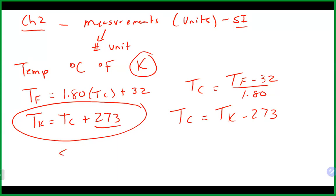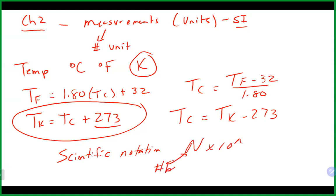We finished up talking about scientific notation. Scientific notation is n times 10 to the n, where that first number is between 1 and 10. It can be a positive or negative exponent depending on which way you move the decimal. We use scientific notation to handle really large or really small numbers so we don't lose zeros along the way. That first number must be between 1 and 10 — not 10 itself, and not something like 0.something times 10 to the n.